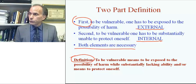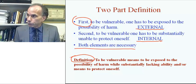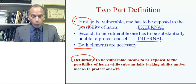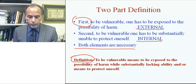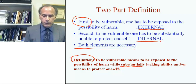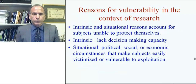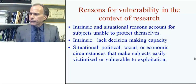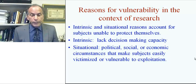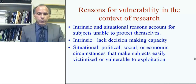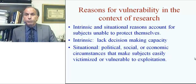So now we are getting closer to a more formal definition in the research context. To be vulnerable means to be exposed to the possibility of harm while substantially lacking ability and/or means to protect oneself. Now, what are some of the reasons for vulnerability? As somewhat implied before, there are intrinsic and situational reasons to account for subjects being unable to protect themselves.